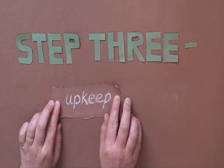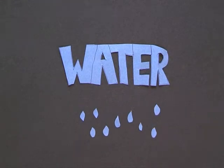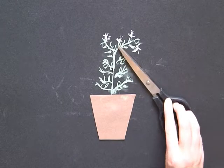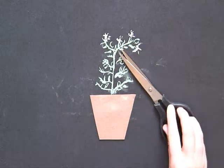Step 3: Upkeep. Water the plant every day to keep the soil moist. If flowers develop on the plant, remove them. This will help the plants grow more leaves.